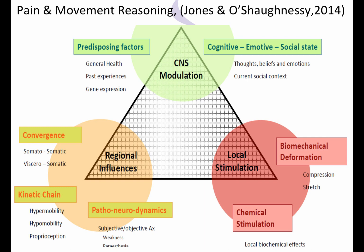As you can see, it's based around this triangle. At the top we have CNS Modulations — that can be anything from their past experience, their general health, and particularly as I found with my recent research on crepitus, the cognitive and emotive elements such as their negative beliefs about their crepitus, their fear avoidance, their social context. For example, are they a carpenter struggling to work, or are they a teenager on a sports scholarship and the patellofemoral pain is perceived as a threat to that?